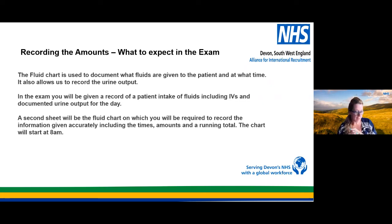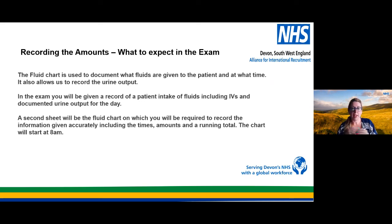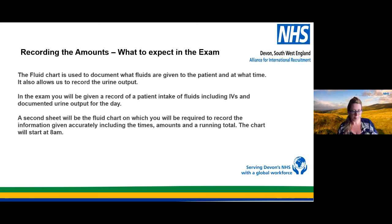From our calculations we can also see if the body is producing correct and safe levels of urine and whether the kidneys are functioning effectively. In the exam, you will be given a record of a patient's intake of fluids including intravenous fluids such as a drip, and their urine output during the day. A second sheet — the fluid chart — will be given to you, and you will be required to transfer the information accurately with times and a running total. All charts start at 8am. You need to transfer everything: amounts drunk, IVs given, and how much they have urinated.